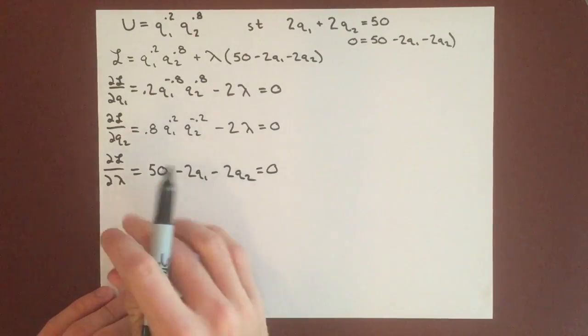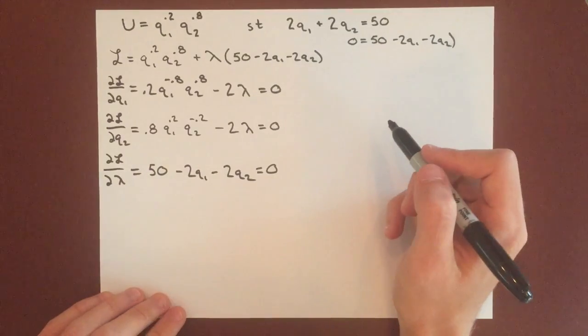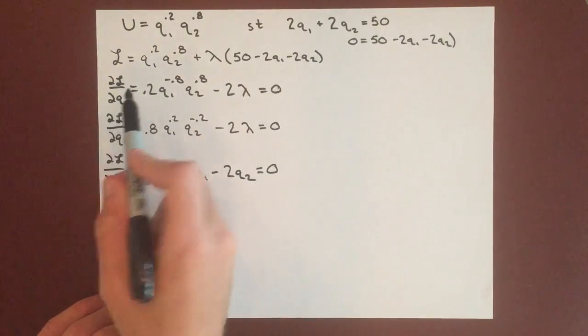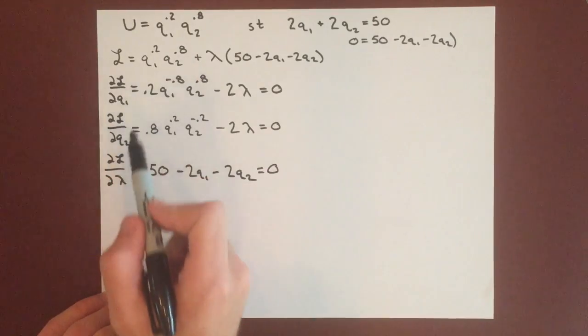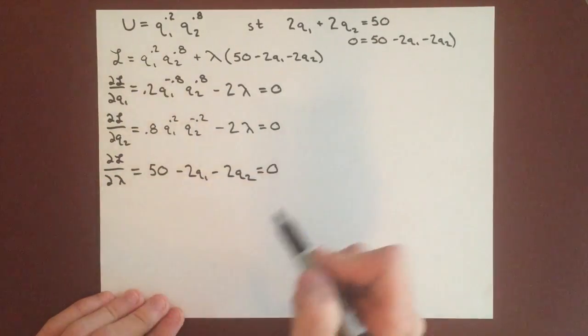And so now we have to solve for q1, q2, and lambda. And for Cobb-Douglas, the easiest way to do this is going to be dividing these top two partial derivatives of q1 and q2. But first we want to move these two lambdas to the other side.